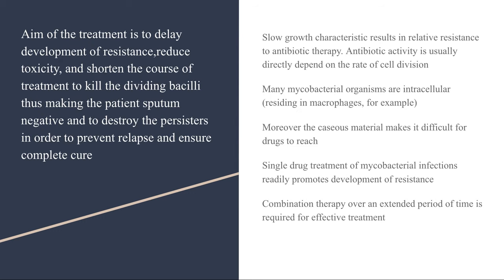What makes tuberculosis highly resistant is: first, it's a slow-growing bacteria, so there is a possibility of persisters and dormants; second, it has an ability to survive intracellularly, residing inside macrophages; and moreover, the caseous material around them makes it difficult for drugs to penetrate. All in all, single-drug treatment readily promotes resistance, which is why we need combination therapy over a long period of time. The aim of treatment is to kill the dividing bacilli, make the person sputum-negative, and destroy the persisters to prevent relapse and ensure complete cure.